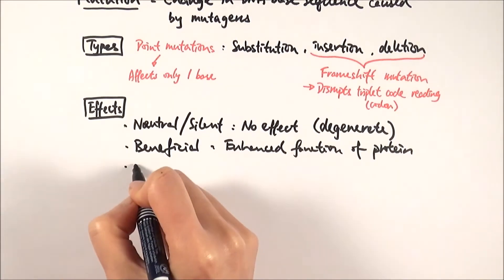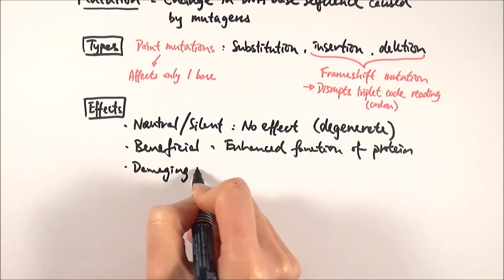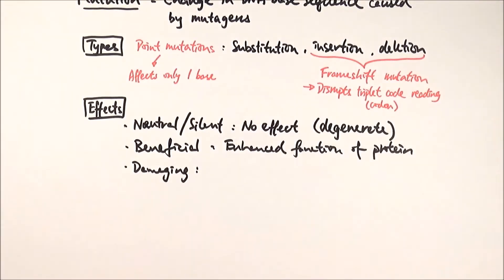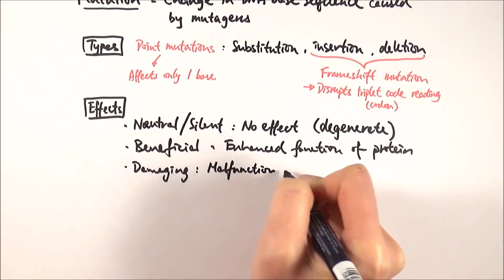In quite a lot of cases, we say that the mutation can be damaging. This is certainly the case in cancer, a classic example. The mutation still produces a protein, but it's malfunctioning.